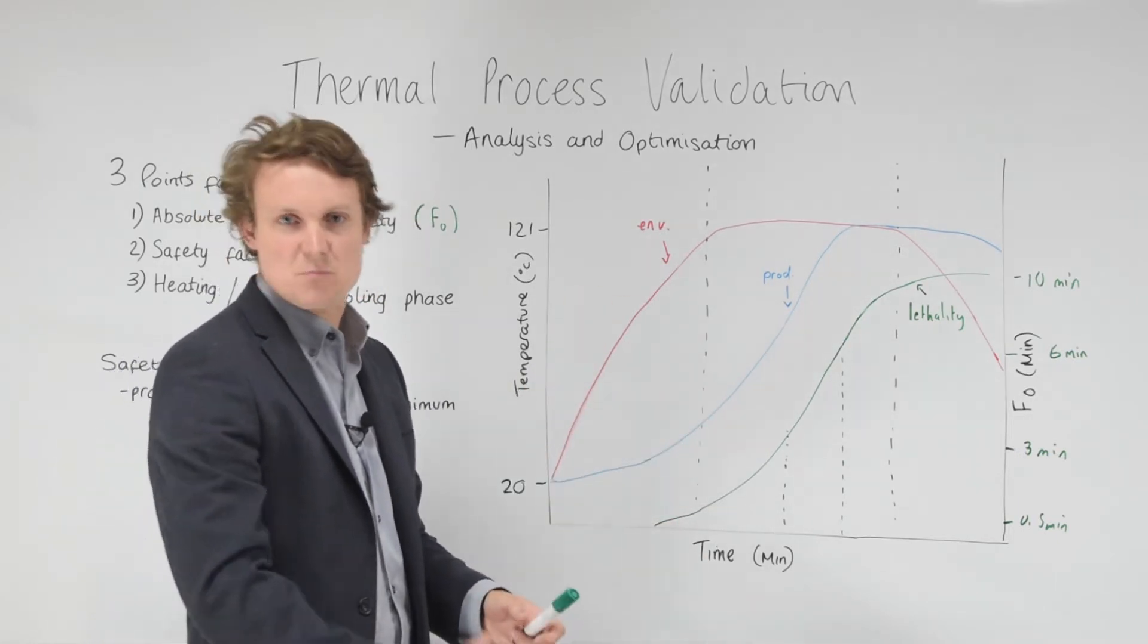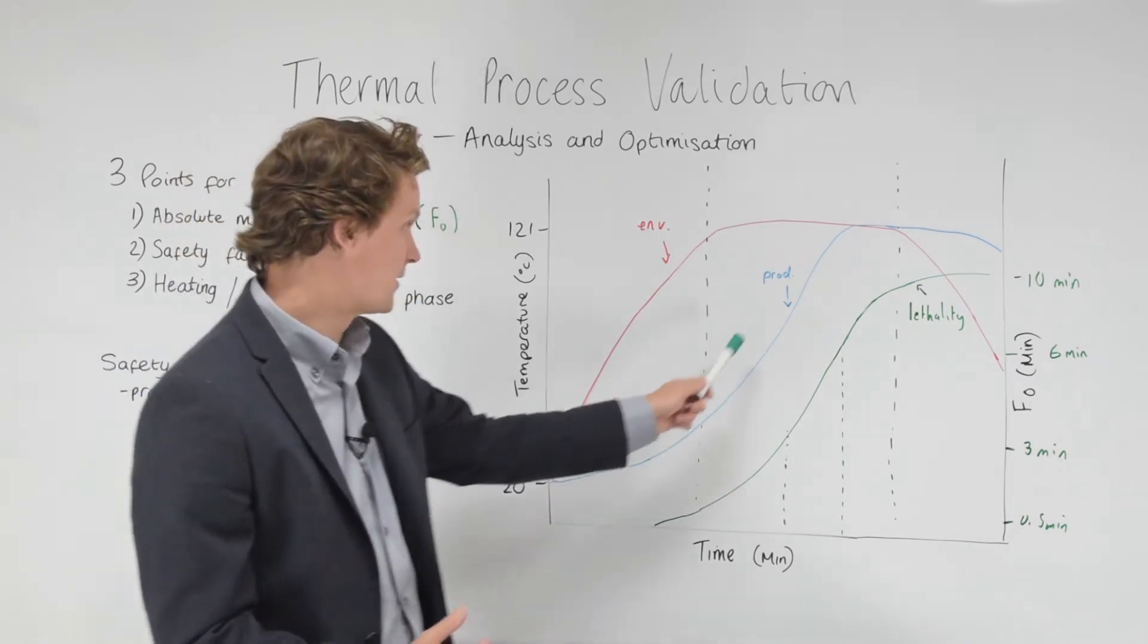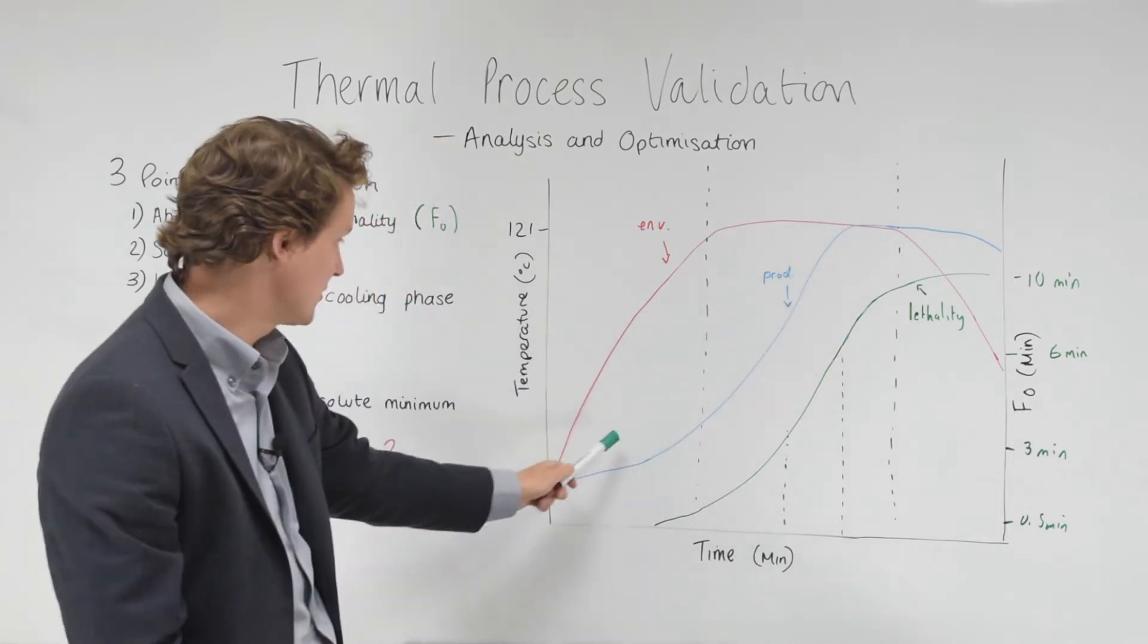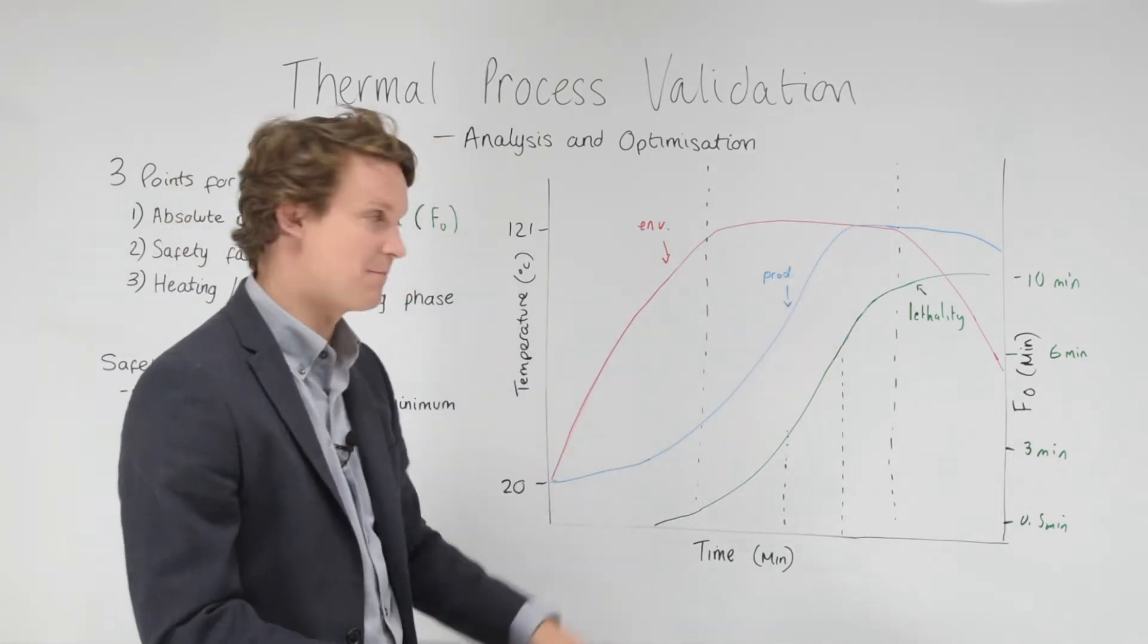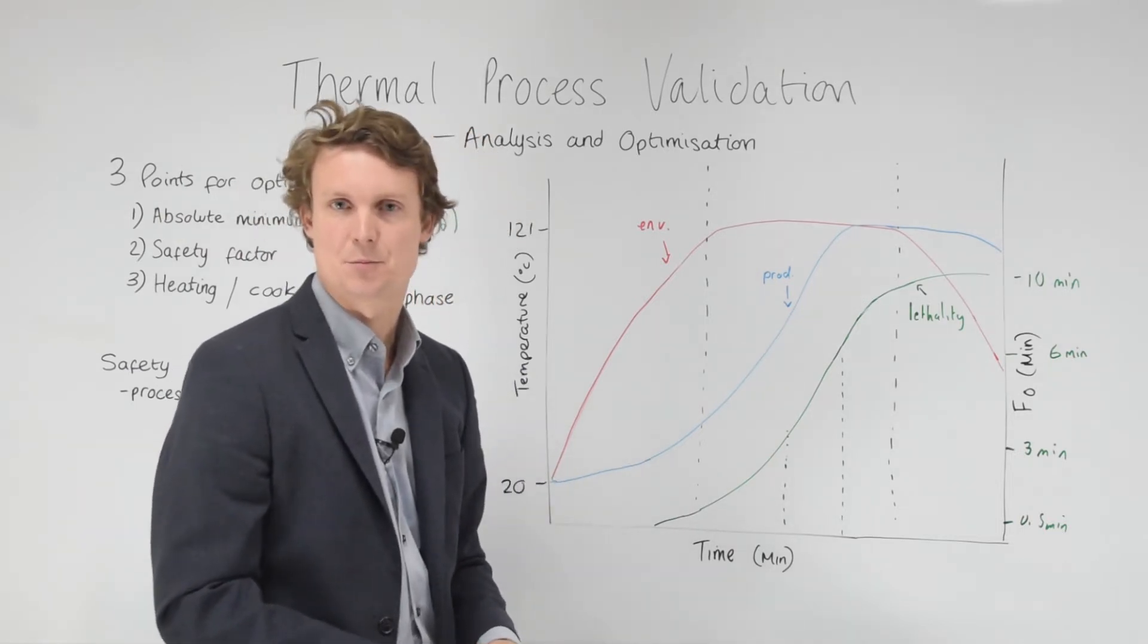This in blue then is the product temperature, taken directly from the validation study. As part of the validation, there should be a number of replicates. We would recommend taking the worst case of your many replicates and using this as your point of reference when looking to optimize the thermal process.